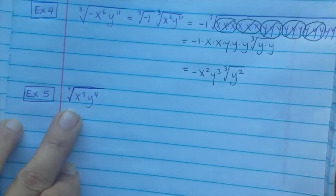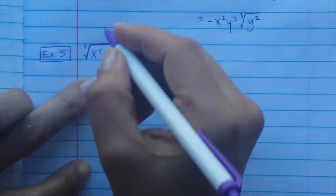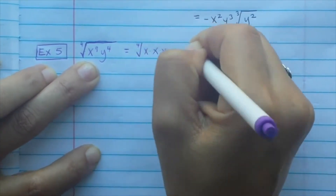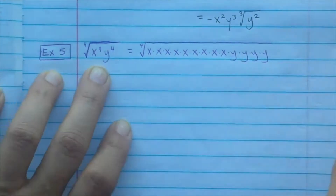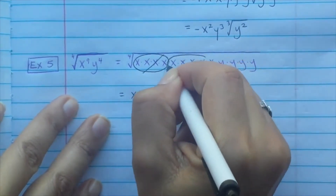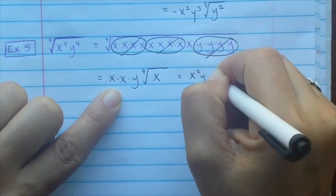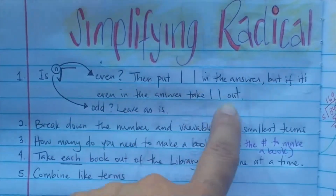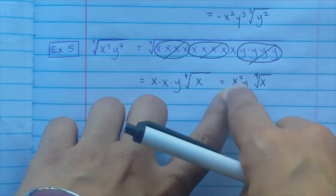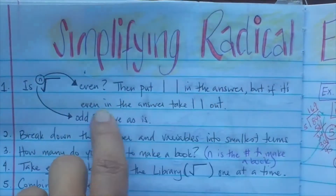Example 5: the 4th root of x^9 y^4. Is n even? Yes, so you need absolute value unless the exponent outside is already even. Break it down: 9 x's and 4 y's. We need books of 4. Circle four x's — one x outside; circle another four x's — another x outside. That leaves one x inside. The y's make one complete book of 4 — y outside. Combine: x^2 times y times the 4th root of x. Now check: x^2 is even, so no absolute value for x. But y is to the power of 1, which is odd — so we need absolute value on y. Answer: x^2 |y| times the 4th root of x.